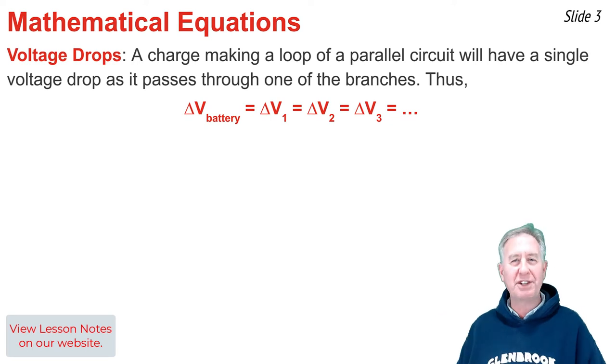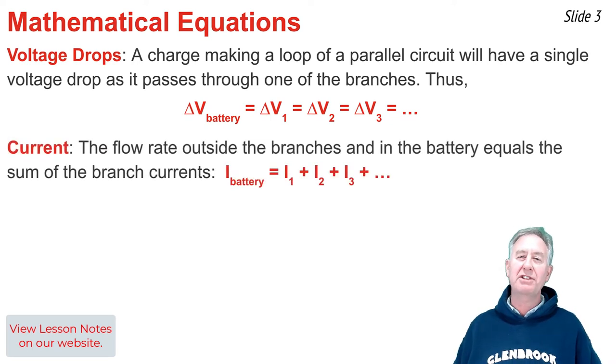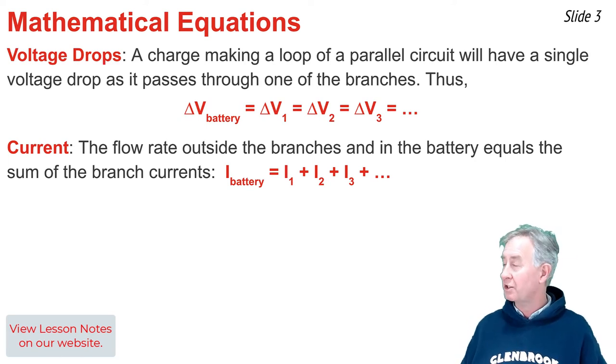That's what this equation is stating. The charge that exits the battery of a parallel circuit will eventually reach a node, and at the node, current is divided into different pathways. The sum of the current in the individual pathways will be equal to the current outside of those branches or pathways.